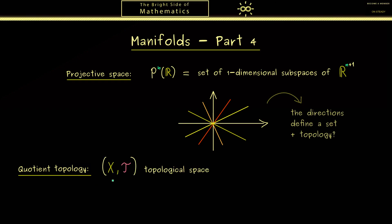So maybe it sounds complicated but you will see it's a very natural construction. We just need two ingredients. First a topological space given by a set X and a topology T. And in addition we need an equivalence relation on X denoted with a tilde. Here you should know an equivalence relation is a relation on X that is reflexive, symmetric and transitive.